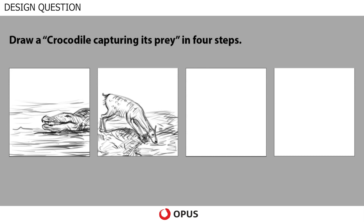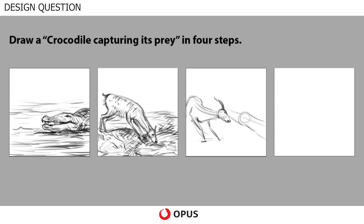Now we will try to draw the crocodile which has just emerged from the water and has taken a grip on the deer. Here the accurate representation of the pose is important — how the prey might struggle when it is caught by the predator, which is the crocodile. You have to draw it in a way that it looks convincing and the accurate depiction of the story is well understood.